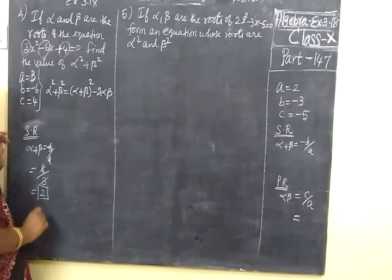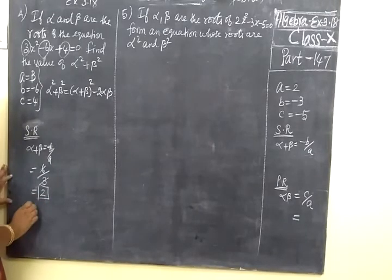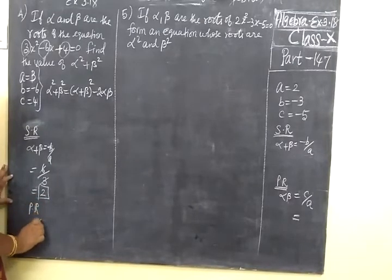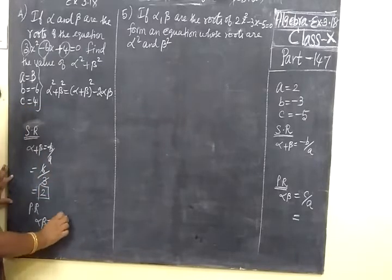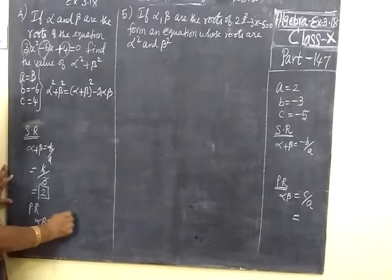So alpha plus beta is 2. Then product of roots, alpha beta equal to C by A. C, what is C? Minus 4. A is 3. So this is minus 4 by 3.